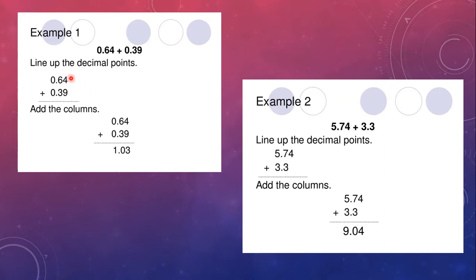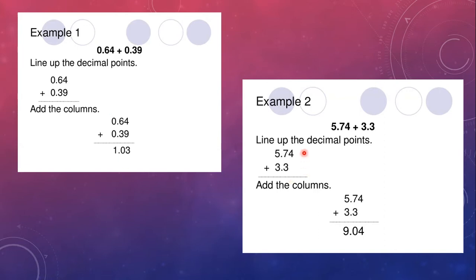Now add accordingly. 4 plus 9 is 13 — write 3, carry 1. Then 6 plus 1 is 7, and 7 plus 3 is 10 — write 0, carry 1. Then 1 plus 0 plus 0 gives 1. So the answer is 1.03.